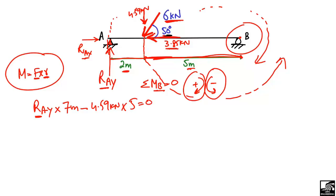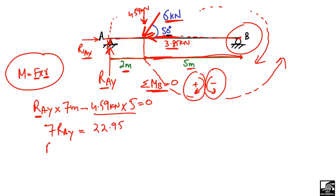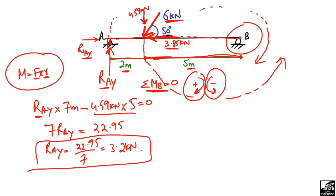Simplifying the moment equation, RAy × 7 − 4.59 × 5 = 0, which gives RAy × 7 = 22.95. Dividing both sides by 7, we get RAy = 3.27 kN. So the vertical support reaction at A is 3.27 kN.